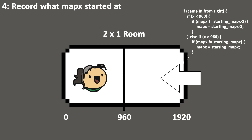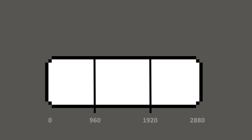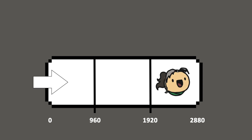This whole bit is the hardest part of this process. From here we can just alter this to fit more room sizes. If the room is 3 cells wide, we would now be checking 3 zones: the space between 0 and 960, 960 and 1920, and 1920 and 2880. So as an example, if we came in from the left and we're standing on the right side of the room past 1920, you would set our mapX to our starting mapX plus 2.